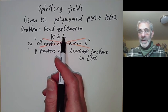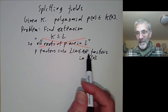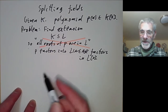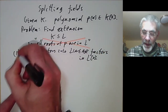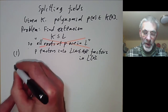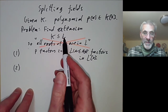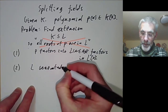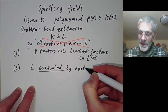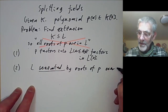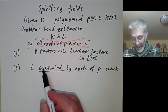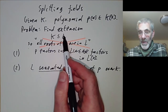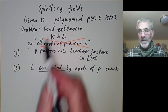If we've got an extension with this property, then any bigger extension will also have the same property, so we really want the smallest extension with this property. Property one: p should factor into linear factors in L[x]. Property two: we want L to be as small as possible, so L is generated by the roots of p over k. Everything in L can be written as some polynomial in the roots of p with coefficients in k.